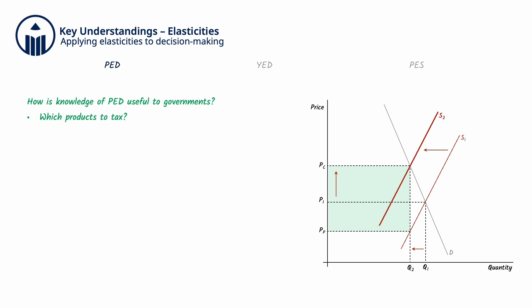Governments impose indirect taxes for a variety of reasons: to raise tax revenue, to discourage production and consumption of demerit goods, and to correct market failure.